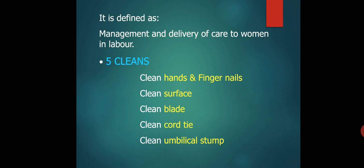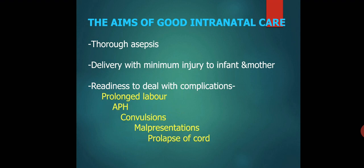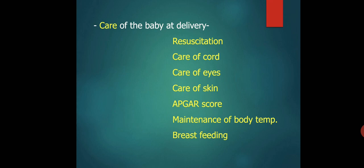The five cleans — clean hand, clean surface, clean blade, clean cord tie, and clean umbilical stem — are very important as they are often asked in pre-PG questions. The complications you can deal with during intranatal care are prolonged labor, APH, convulsions, malpresentations, and prolapse of the cord.